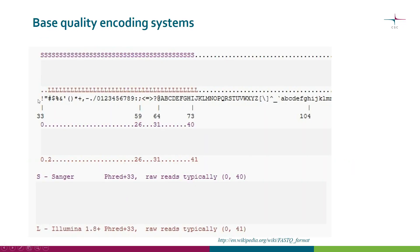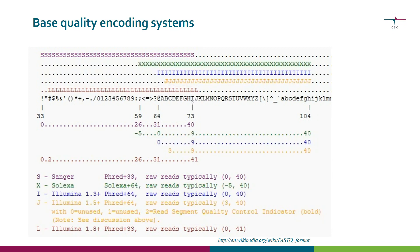The ASCII alphabet starts from the 33rd character, which is the exclamation mark, representing a base quality of zero, and goes up from there. A base quality of 40, which is very good quality, is indicated by capital I. If you have older Illumina data, there are other encoding systems as well.